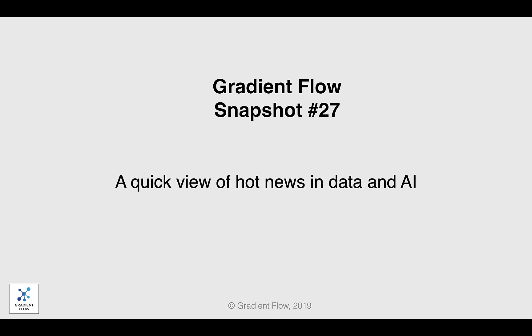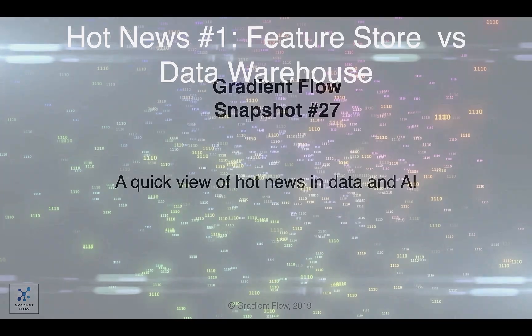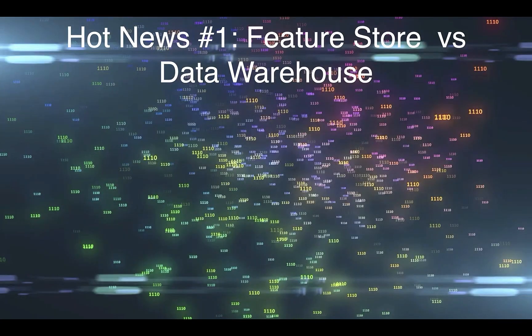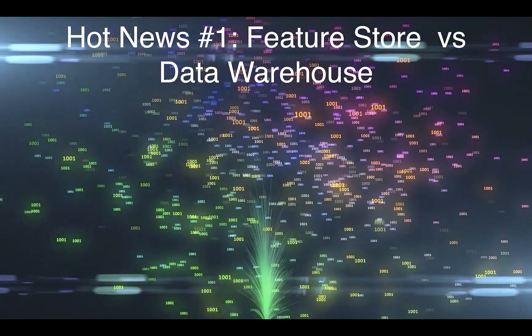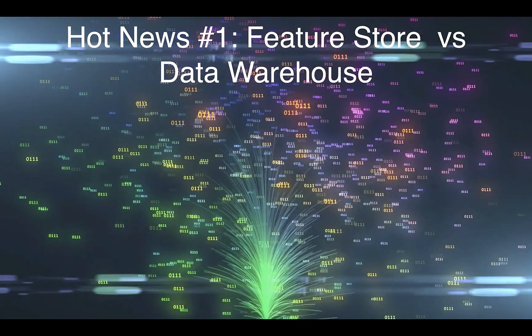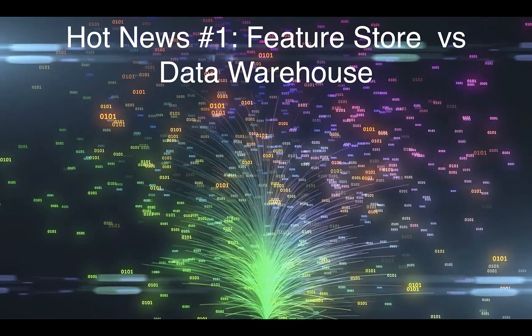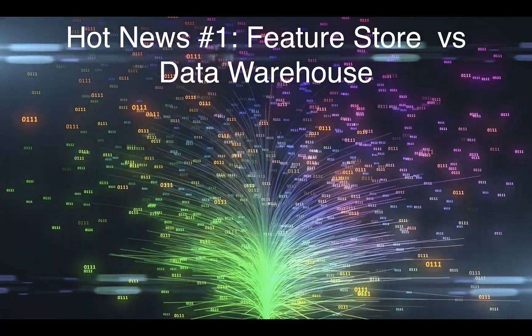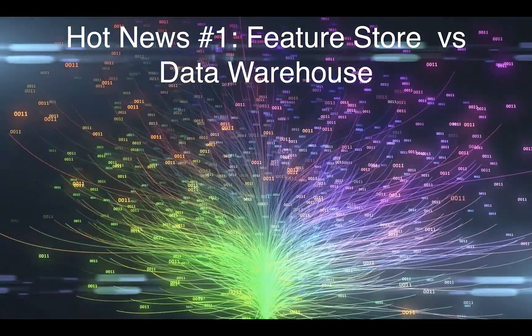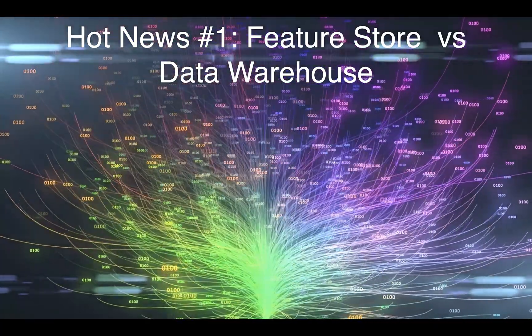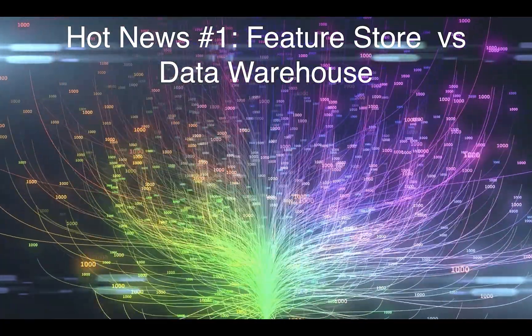Welcome to Gradient Flow Snapshot number 27. A feature store is a data warehouse of features for machine learning. Most data scientists currently do not have a feature store, and they spend a lot of time finding and cleaning data.